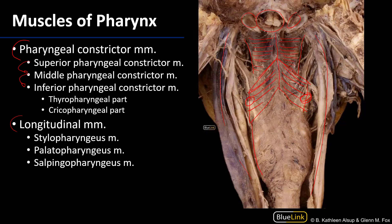And then we have an inferior pharyngeal constrictor muscle here. The inferior pharyngeal constrictor takes its origins from the larynx, and there are two distinct parts to these muscles. They each meet their counterpart along a midline raphe. The thyropharyngeal part takes its origin from the thyroid cartilage — we can see the superior horns of the thyroid cartilage here, approximately here.